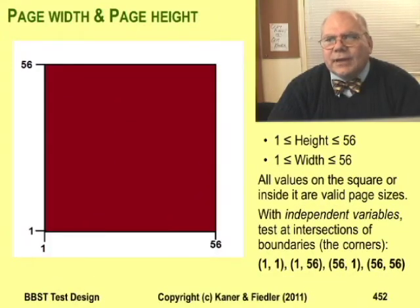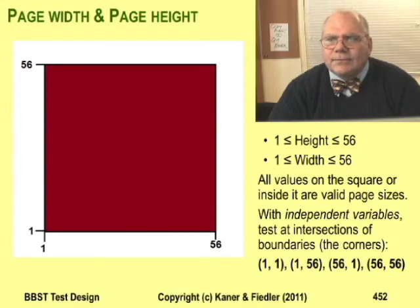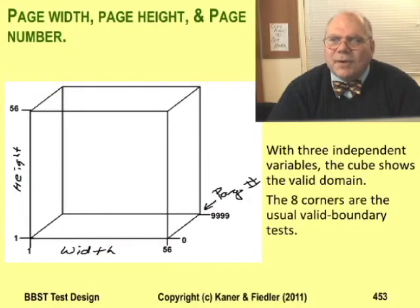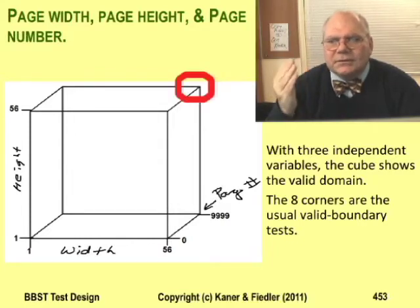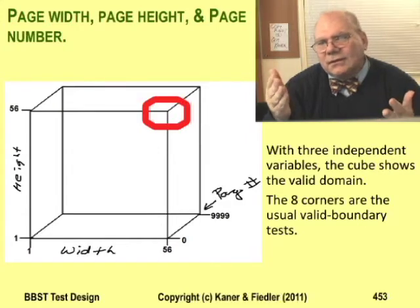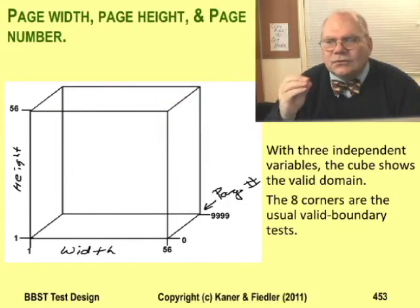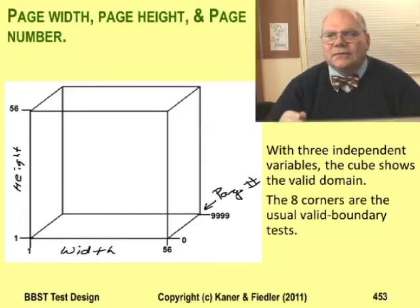Here's a diagram of the possible page widths and page heights. All values from 1 inch by 1 inch to 56 by 56 are possible. With independent variables, I'm most likely to test at the combined boundaries — that means the corners of the graph. When you combine three variables, you get a cube; again, if the variables are independent, I'm most likely to test at the corners. So I'll test the biggest page width with the biggest page height with the biggest starting page number, and so on. This is simple boundary testing, simpler than the last lecture because we're ignoring all the potential invalid inputs.